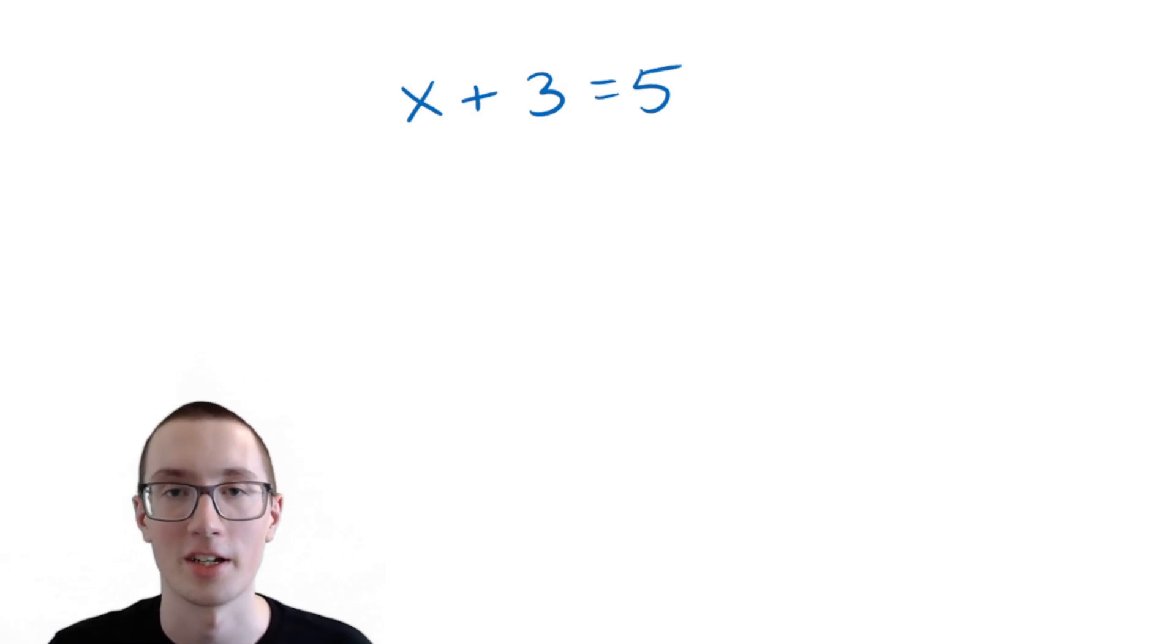That's just a fancy way of saying we need to get x, the variable, by itself. We need to get the letter by itself, and by that we mean by itself on this side of the equation. So x should be on the left side, or the right side, but either side is fine, and everything else should be on the other side. Now, how do we do that?